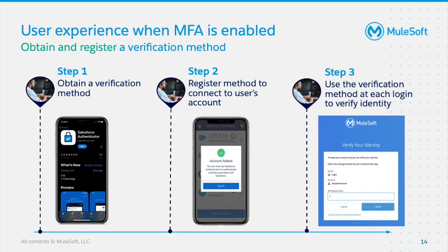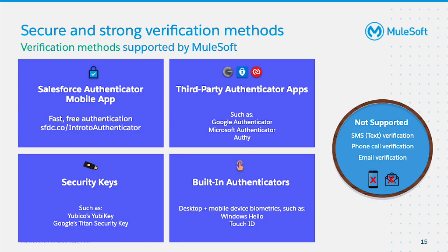Let's look at the different verification methods that the organization can choose from. You can configure Salesforce Authenticator or third-party authenticator apps such as Google Authenticator, Microsoft Authenticator, or Authy. These apps generate a time-based one-time password that the user provides when logging into Anypoint platform. Another option is to register a USB security key such as YubiKey or Titan security key — note this is a physical device that must be procured by the organization. You can also use a built-in biometric authenticator such as Windows Hello or Touch ID. Note that MuleSoft does not support email, SMS, or phone-based verification methods, as they can be easily compromised or intercepted.